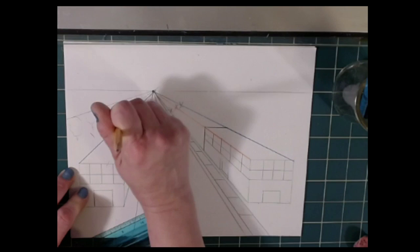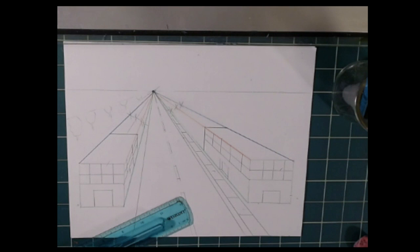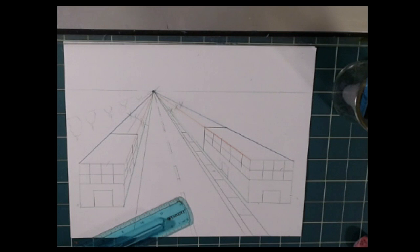We have our road with our curb and our two buildings. Once you've got your trees, the space saved for those, you can erase the lines. Now let's put a few mountains in the background. We're just going to draw some basic wavy lines there. And I believe that's where we'll stop for today.